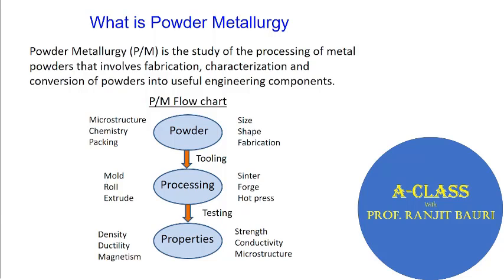Once you have the compact after molding, rolling, or extrusion, you need to close all the pores remaining in the compact so that at the end you come up with a fully dense solid. To achieve that, you need to either sinter the powder, forge it, or hot press it. These are all high-temperature processes — sintering, forging, or hot pressing — which ensure that whatever porosity remains after compaction is closed.